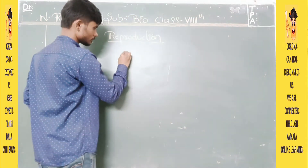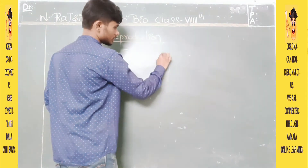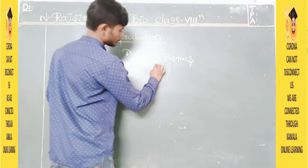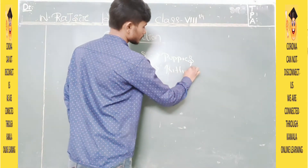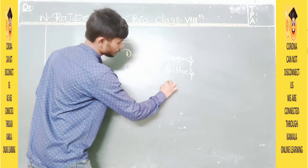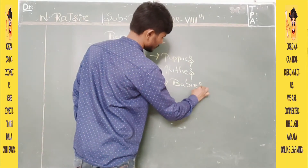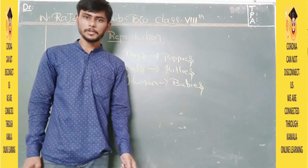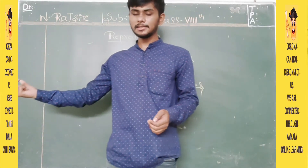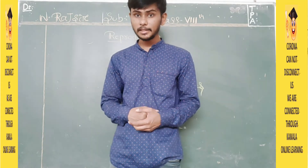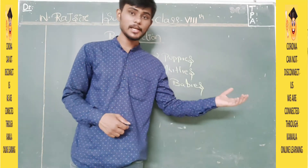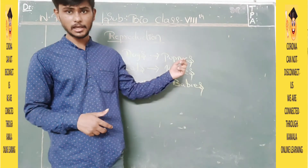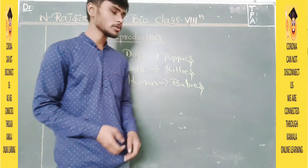You might have seen dogs and puppies, cats and kittens, and human babies. They are adults and small babies — how are they produced? They are produced because of reproduction. In our previous classes, we have already gone through reproduction in the case of plants — how they reproduce asexually and sexually. Now in 8th class, we will be learning reproduction in animals.